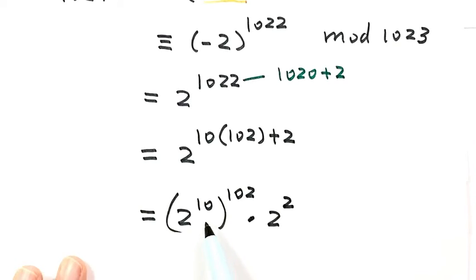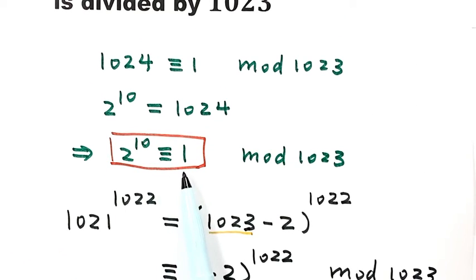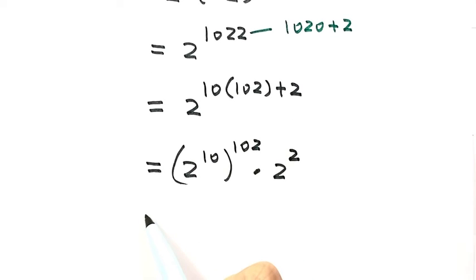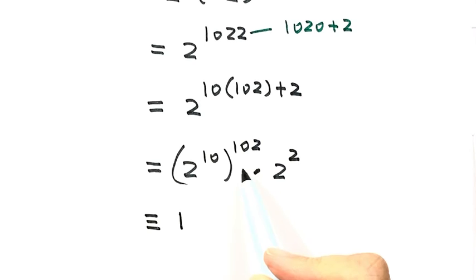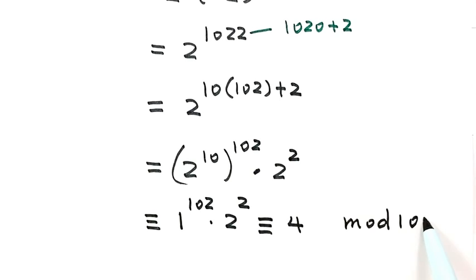For 2 to the power of 10, we can use our earlier result — it has a remainder of 1 when divided by 1023. So this becomes 1 to the power of 102, times 2 squared, which gives a remainder of 4. So 4 is the answer to this question.